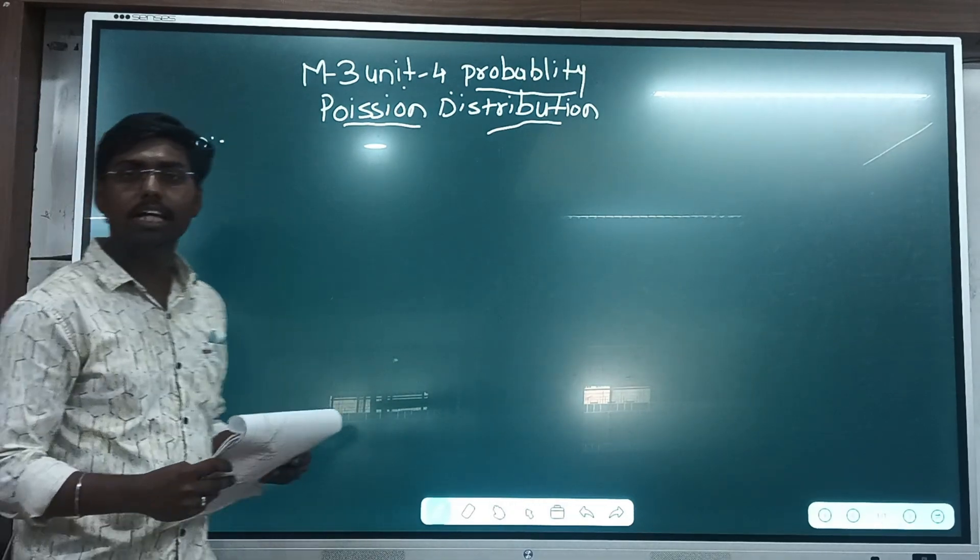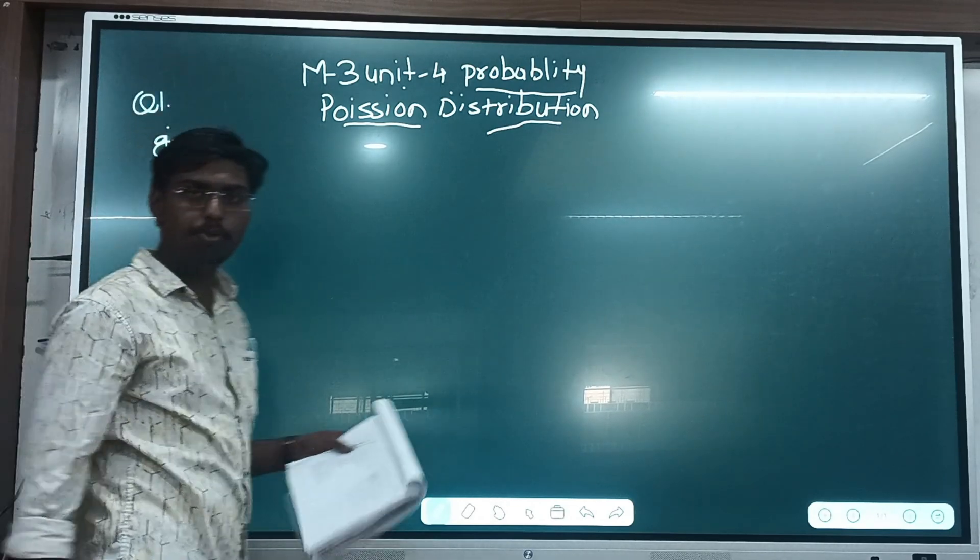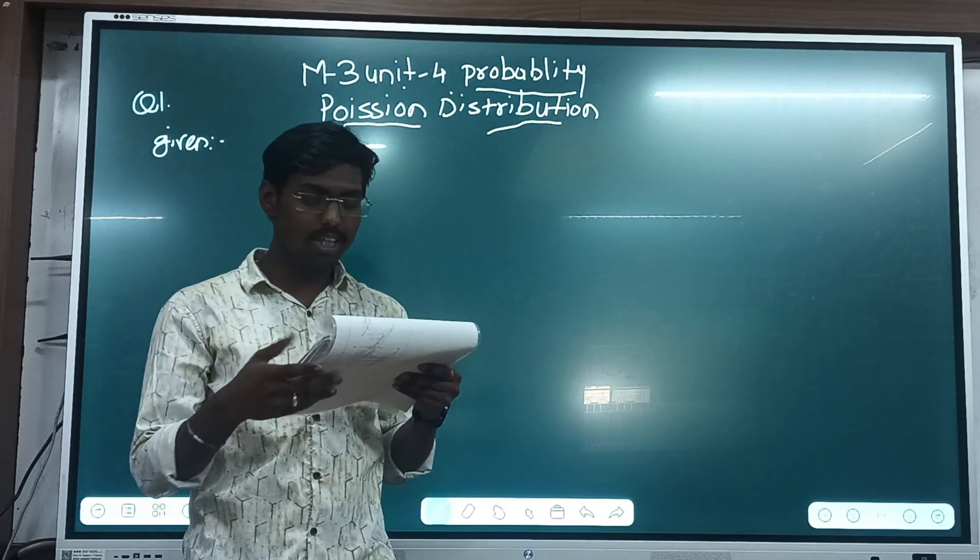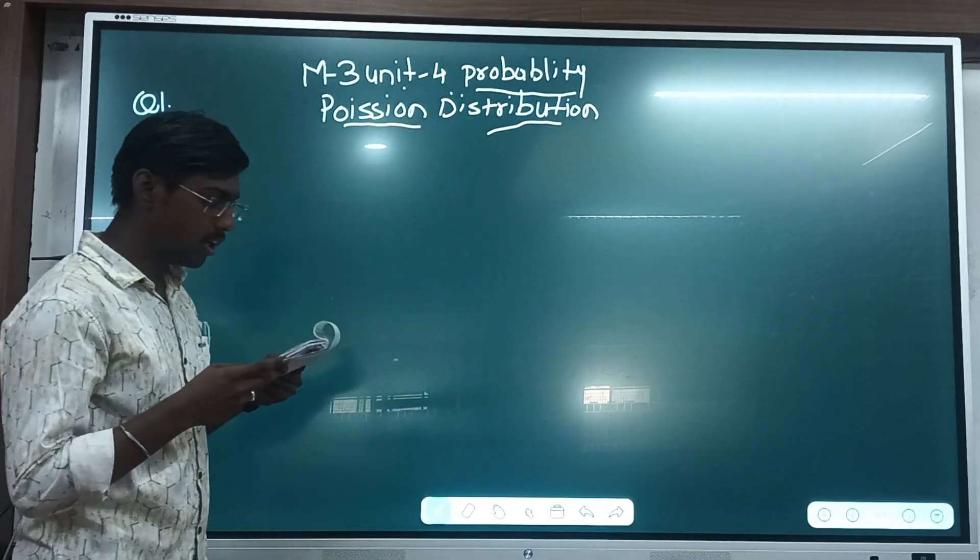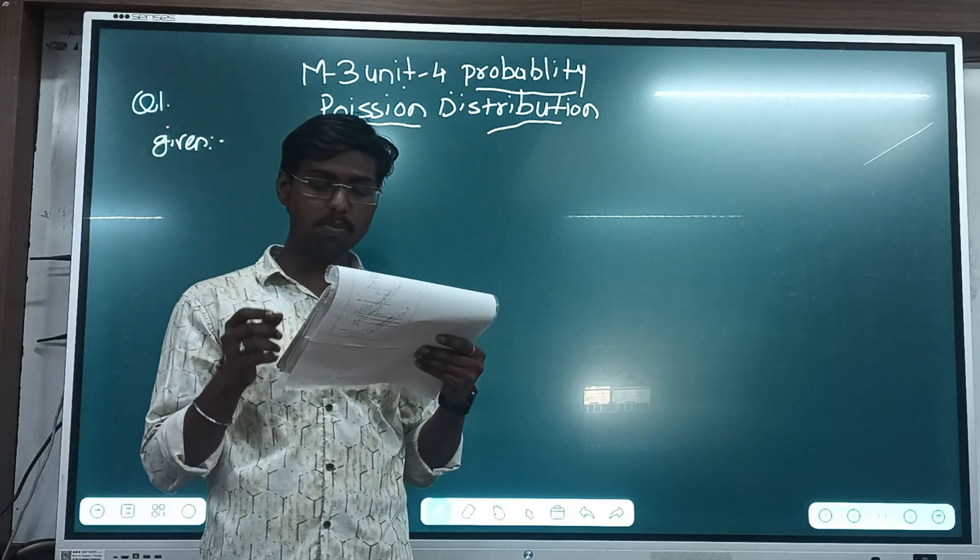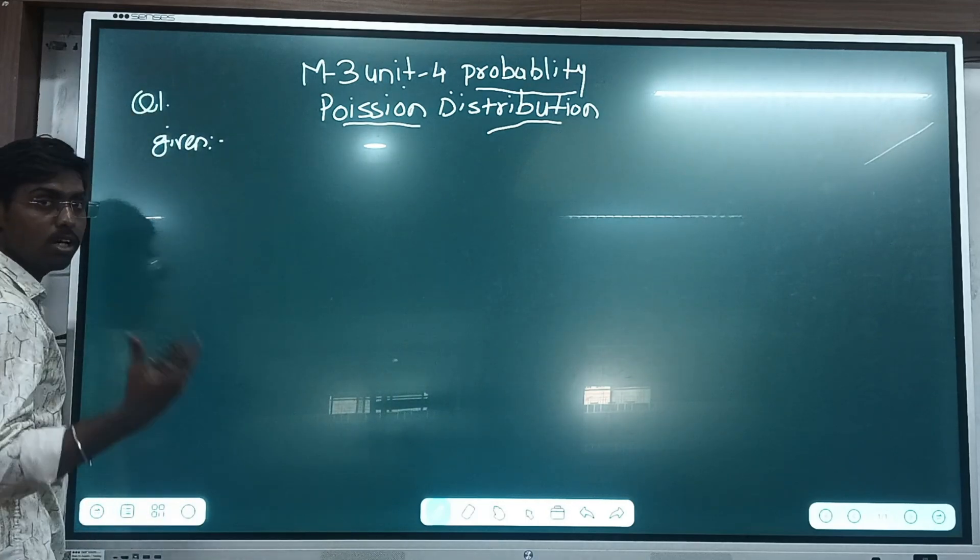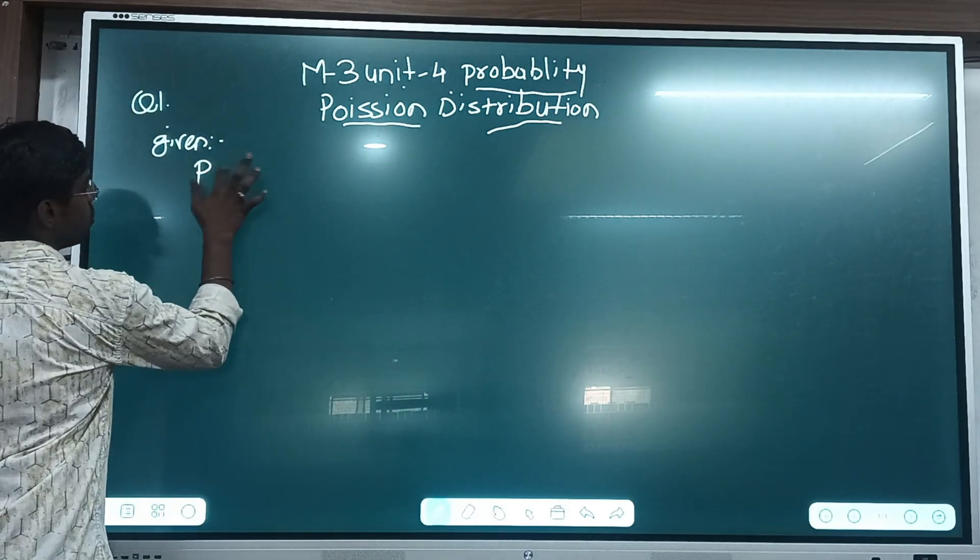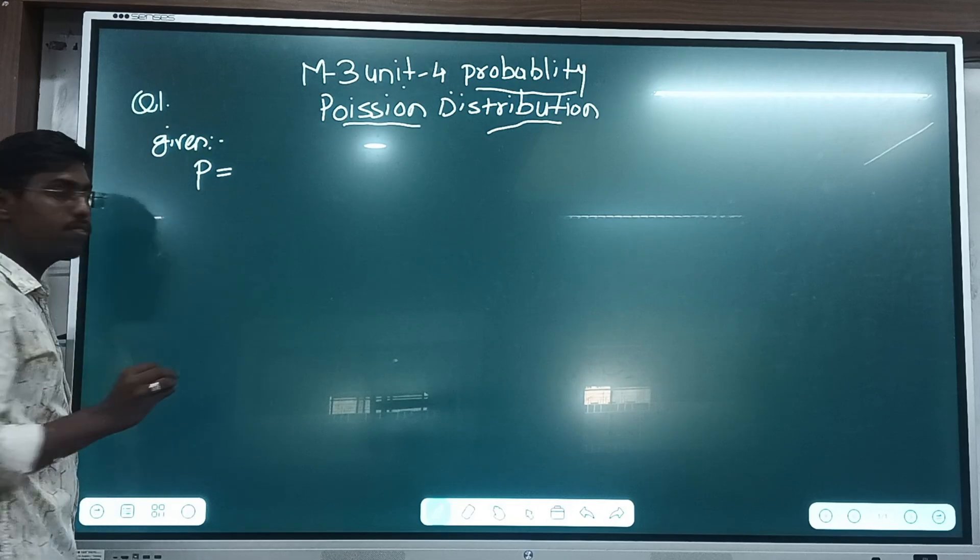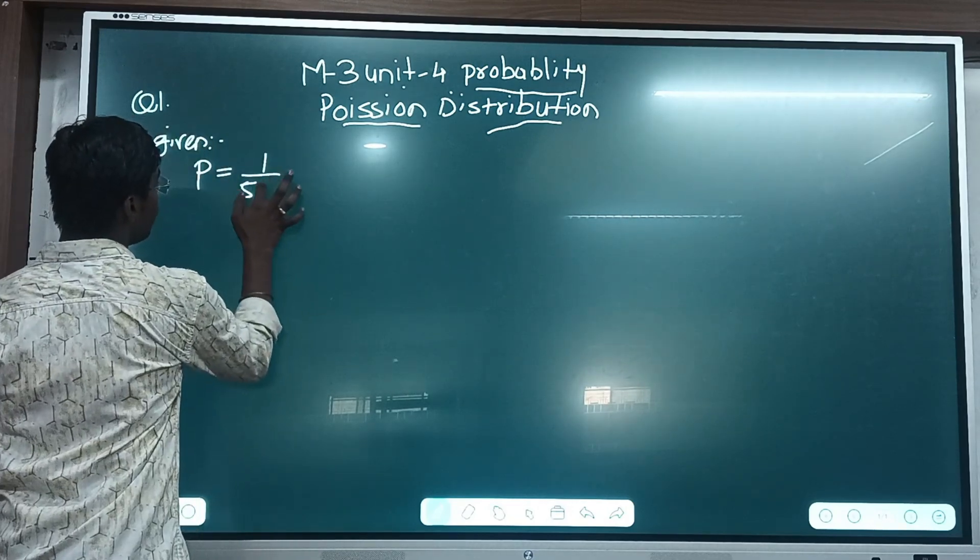We are taking a question directly based on this Poisson's distribution. The question is given that in a certain factory, the turning out of the blades, there is a small chance of 1 by 500 for the blades. Chances means the probability of success. So it is given by the small little p, is 1 by 500, which is nothing but 0.02.